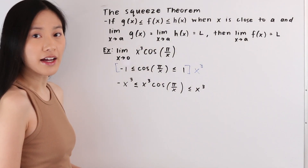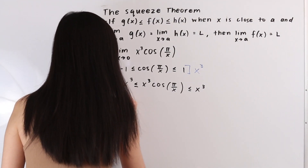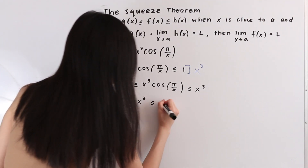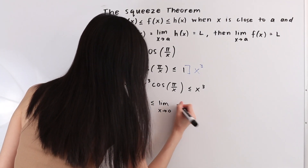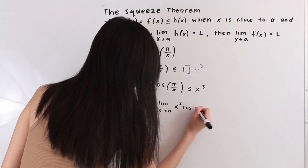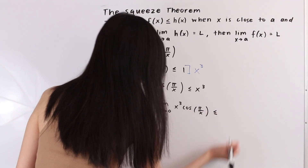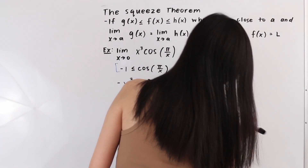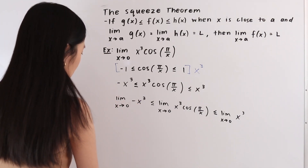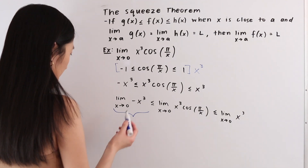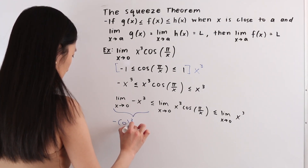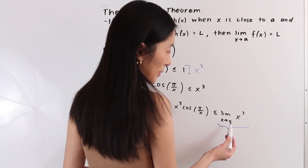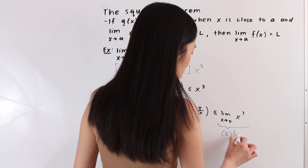We're going to take the limit of this entire inequality. So we have the limit as x approaches 0 of negative x³ ≤ the limit as x approaches 0 of x³ cos(π/x) ≤ the limit as x approaches 0 of x³. Using the substitution method and plugging in 0 for x: negative 0³ equals 0, and 0³ equals 0.